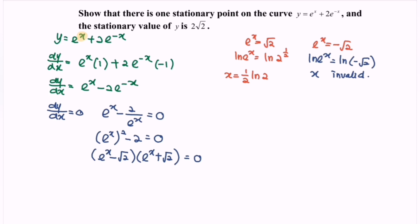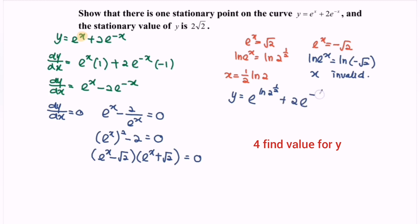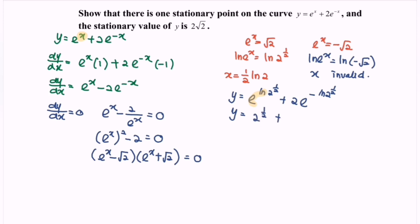Next, find the value of y to determine the stationary point. Substitute x = (1/2)ln 2 into y = e^x + 2e^(−x). So y = e^(ln 2^(1/2)) + 2·e^(−ln 2^(1/2)). Using the property that e^(ln a) = a, we simplify: e^(ln 2^(1/2)) = 2^(1/2) and e^(−ln 2^(1/2)) = 2^(−1/2).